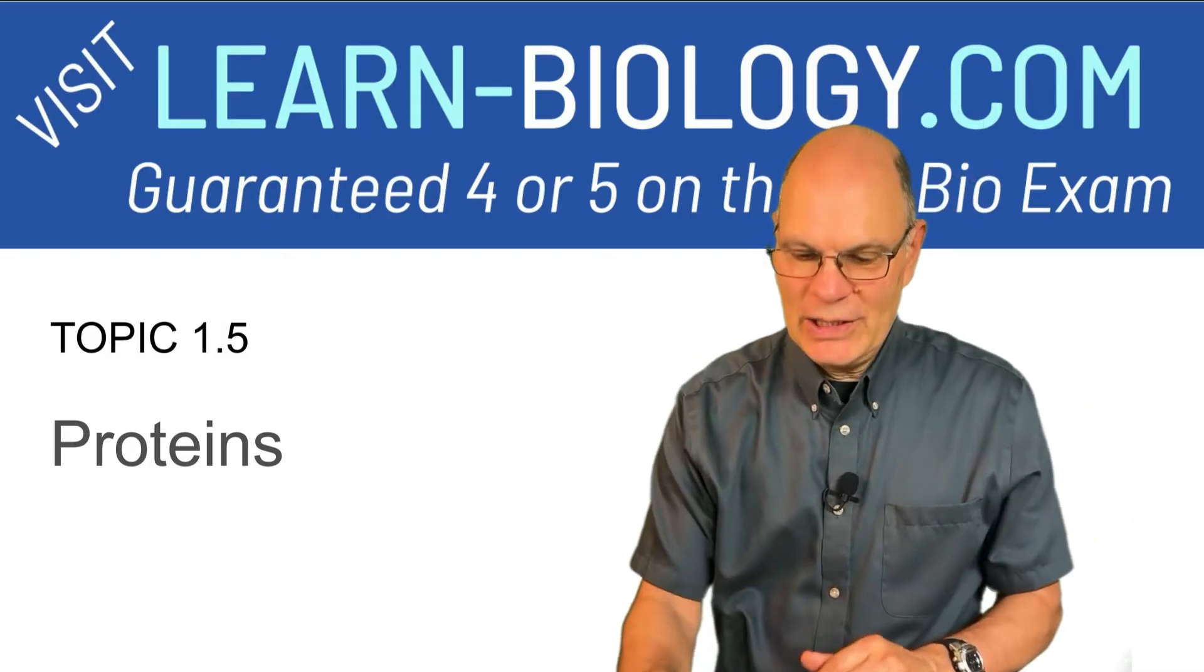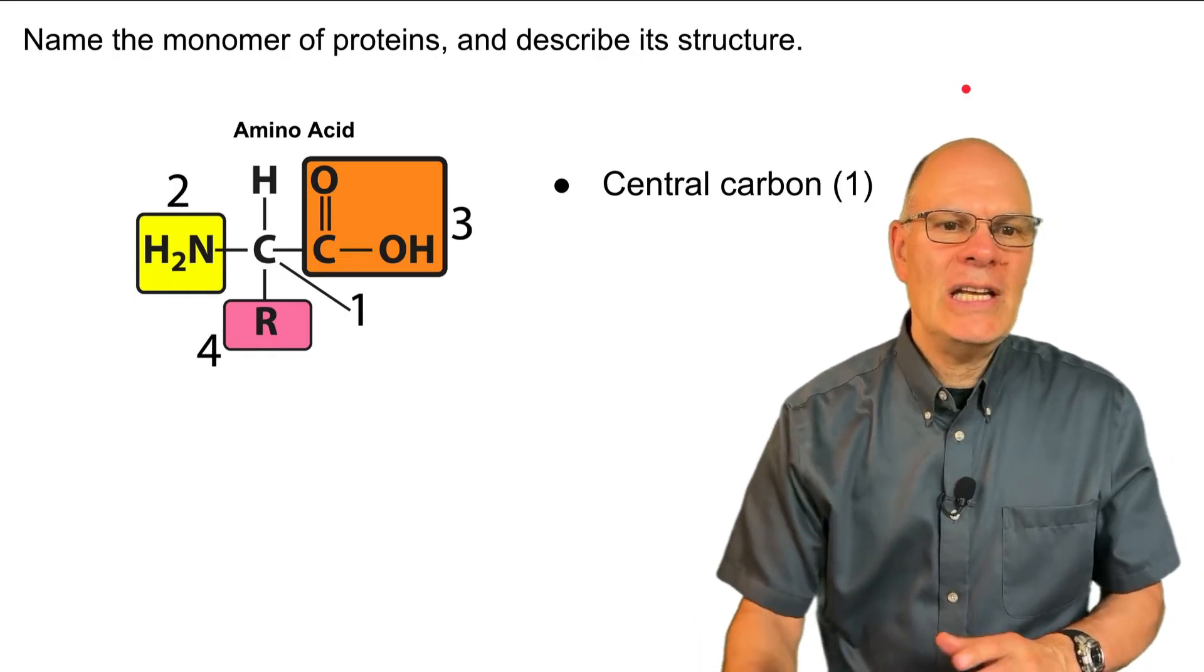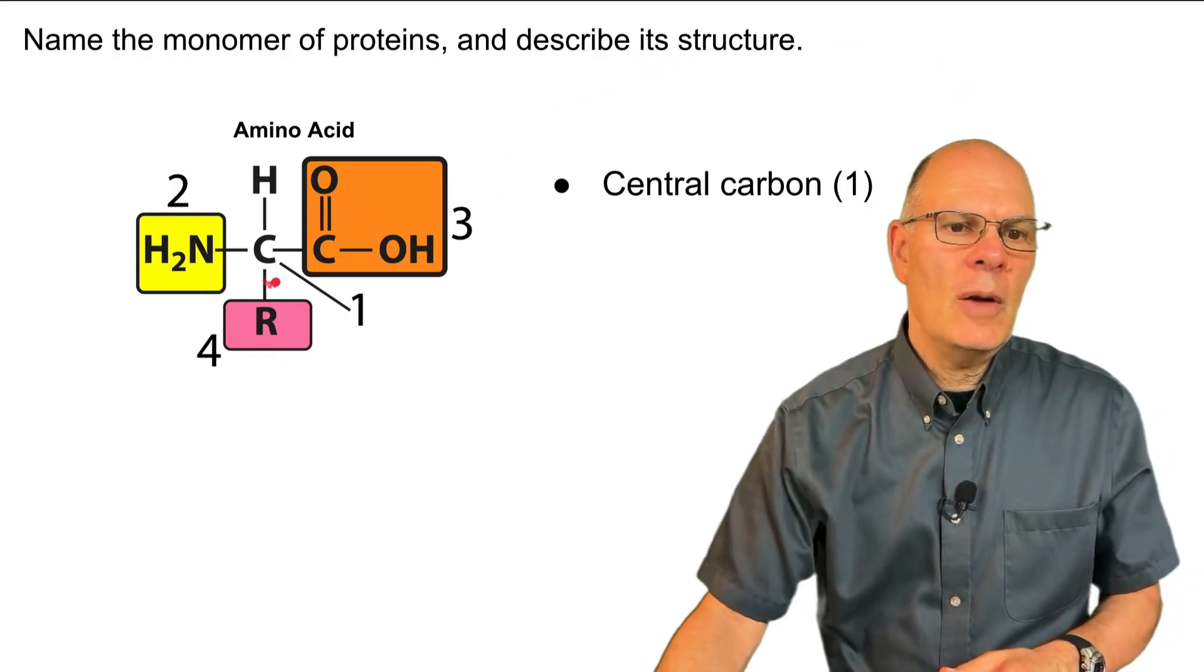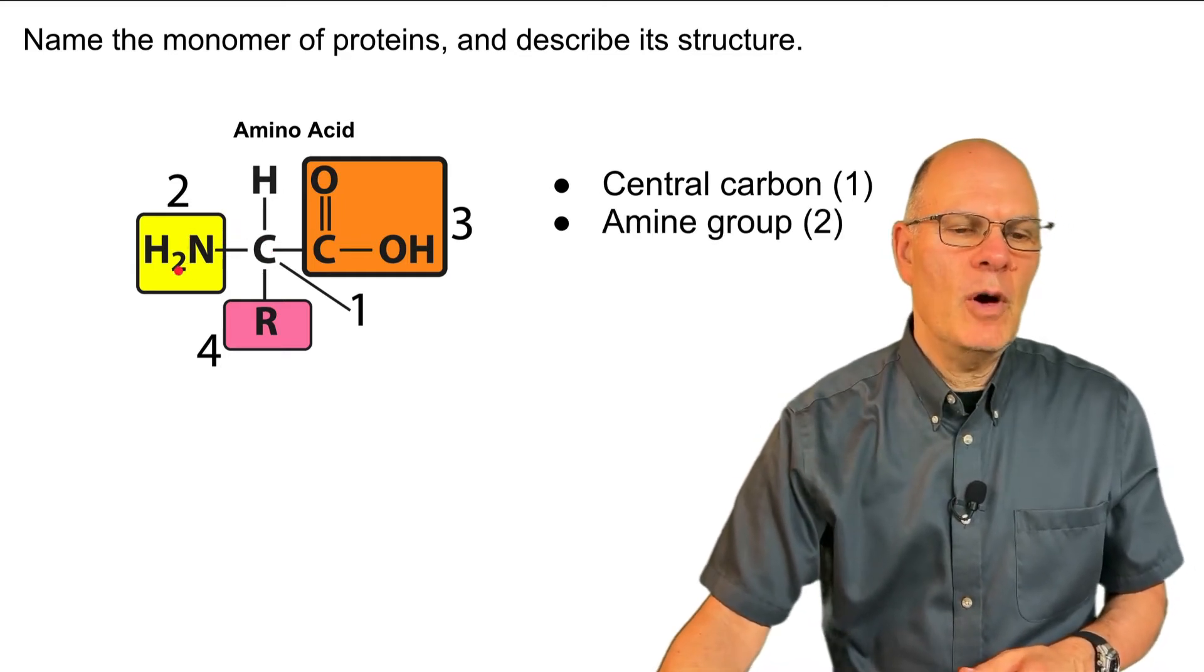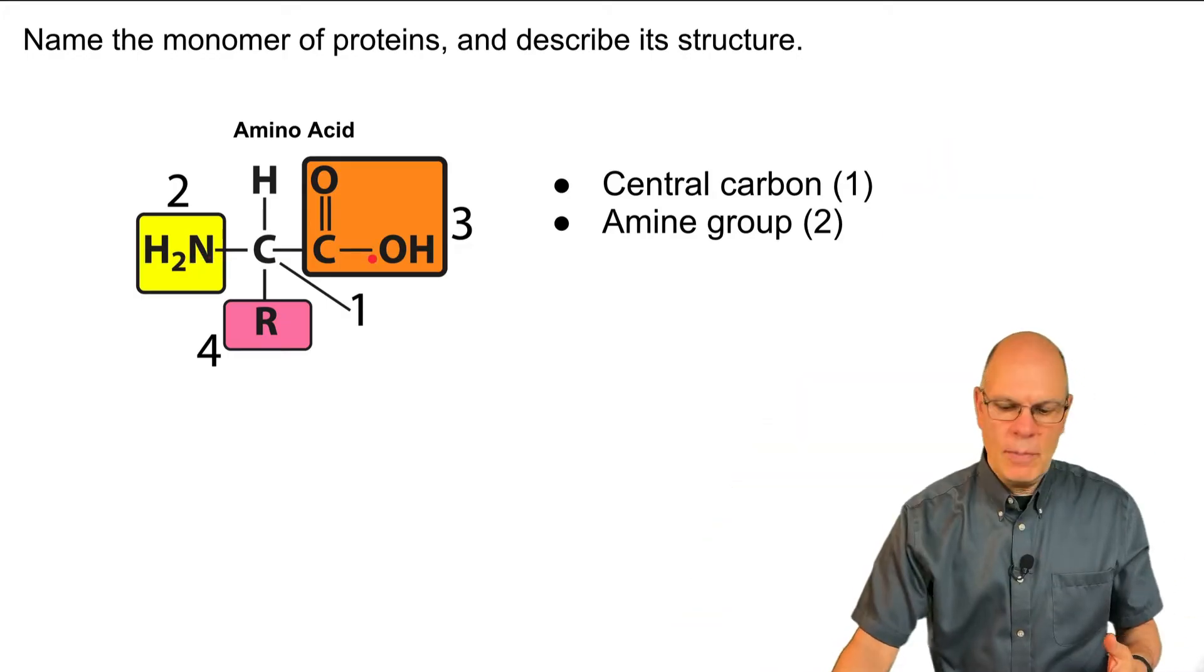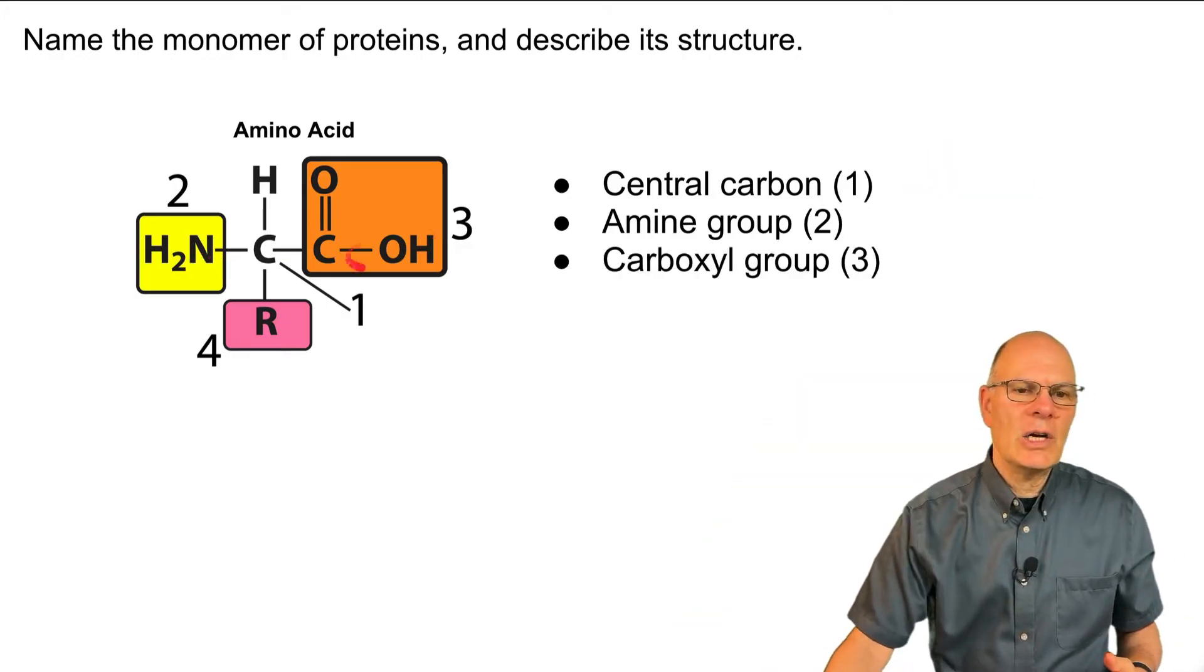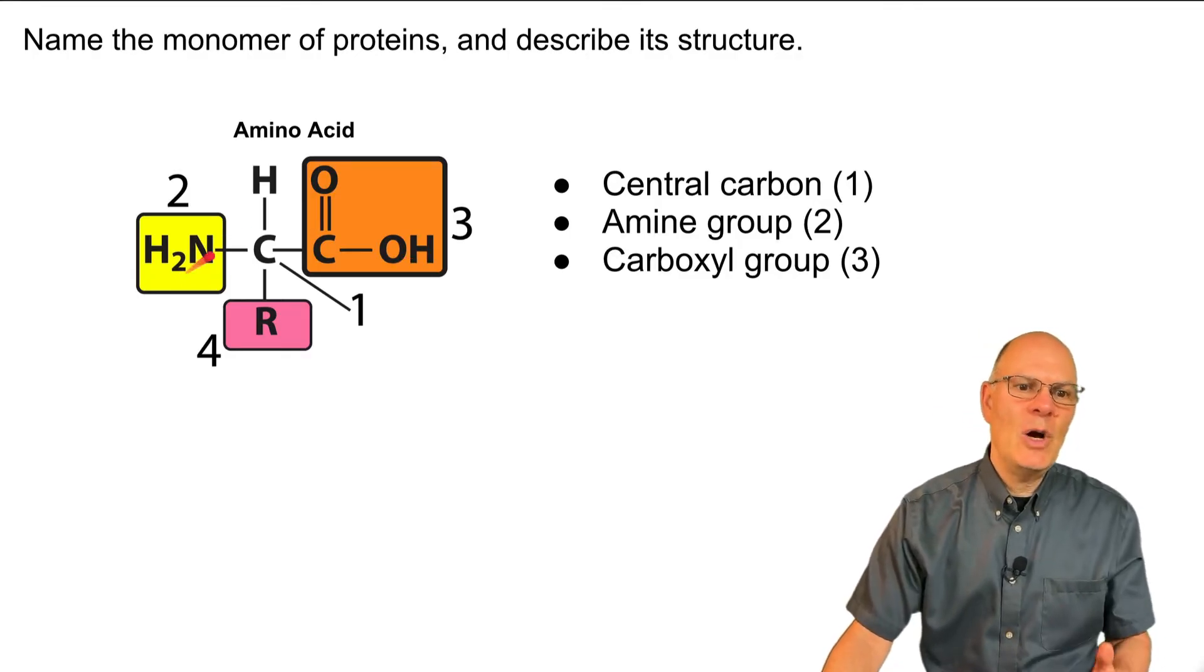Let's review proteins. So the monomer is an amino acid and it has a central carbon over here and connected to that carbon is an amine group over here that makes this basic in its structure, but over here on the other side it's got a carboxyl group and that makes it acidic. So therefore it's an amino acid.